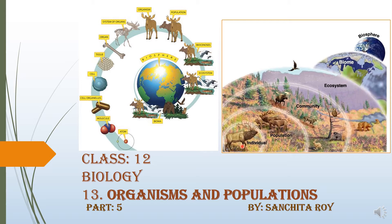In the previous videos we discussed about the interaction with the abiotic factors to cope up with different types of temperature, water availability, soil type, and light. Organisms show different types of adaptations. But today I am going to discuss how organisms adapt themselves to protect themselves from the different types of biotic components present around them in their habitat.